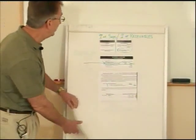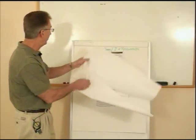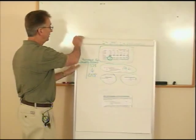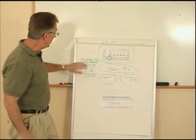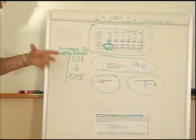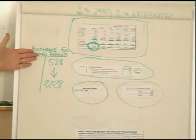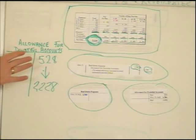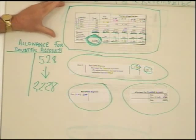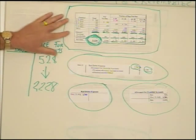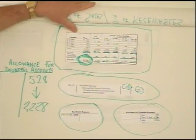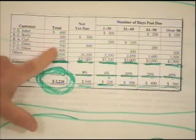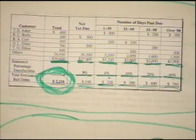Now let's move on to the percentage of receivables — it's a whole different approach. There are two ways to do it. The most common way is what's called the aging of receivables. We have a listing of everyone who owes us money, similar to what's in your textbook, with individuals and a category called 'others' showing $36,950 due from additional customers.